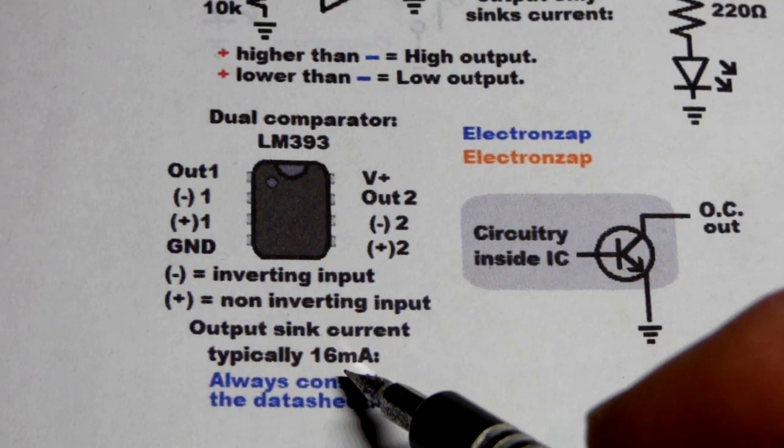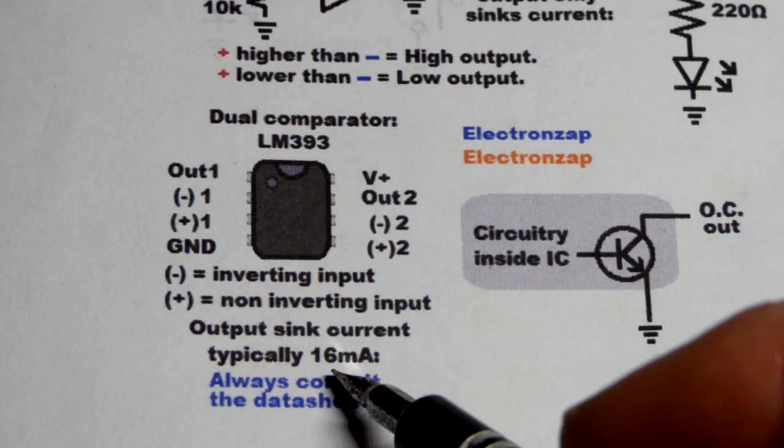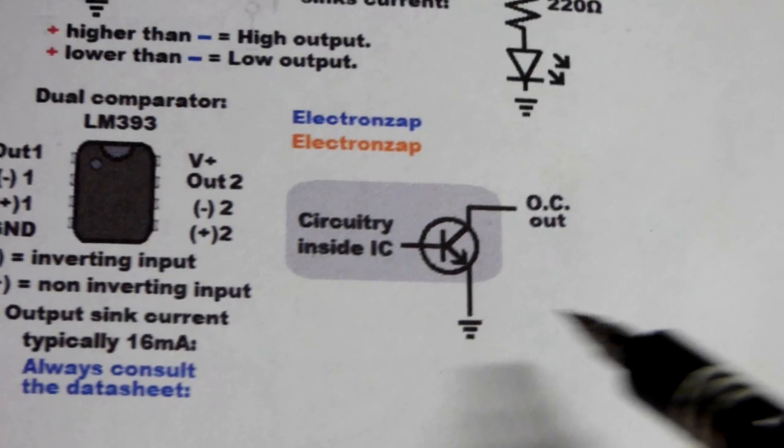One thing to be aware of with this integrated circuit. According to the data sheet I read a long time ago, it can only sink about 16 milliamps of current. And that is all that it does. It just sinks current.